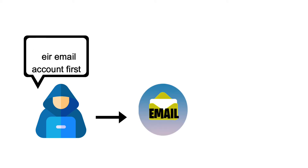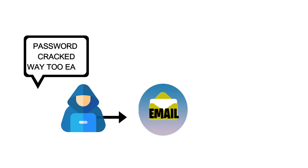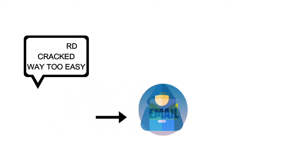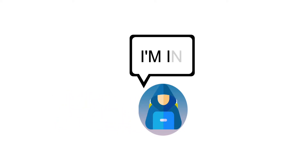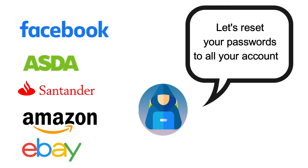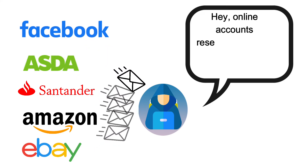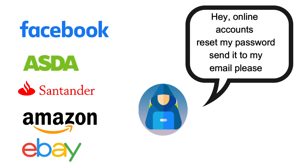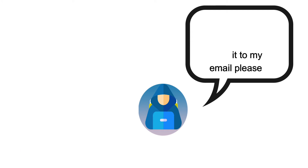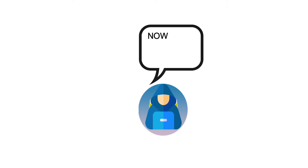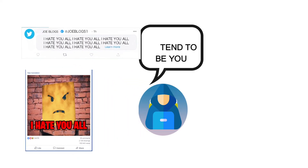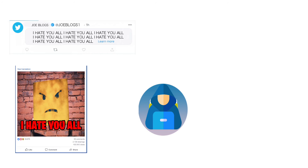So how is the hacker going after your email account first? Because this is the key to your digital life. Once he's into your email account, he can reset all the passwords to your accounts - such as Facebook, online shopping, banking, Amazon, eBay - and all those get sent back to your email account. Now he has control of those as well, and he can impersonate you on social media. People are not going to know it's not you because it's going to be sent out in your name.